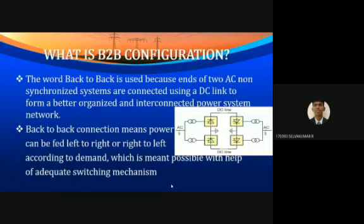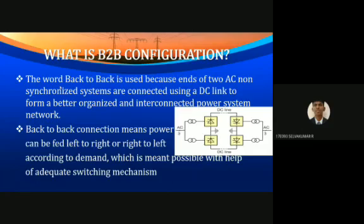First, what is back-to-back configuration? As you can see in this image, AC supply is given as input and AC supply is given as output. These both input and outputs are interconnected using a DC line. The word back-to-back is used because ends of two AC non-synchronized systems are connected using a DC link to form a better organized and interconnected power system network. Back-to-back connection means power can be fed left to right or right to left according to demand, which is made possible with the help of an adequate switching mechanism.